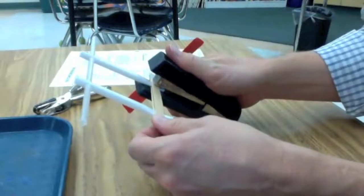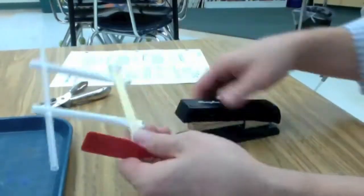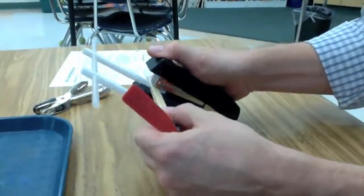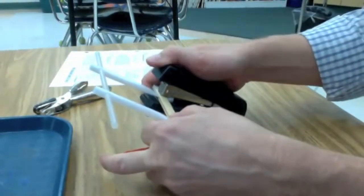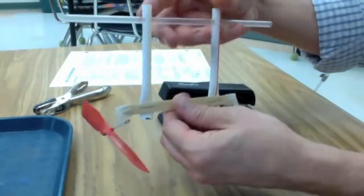Then, use a stapler to staple through the popsicle sticks and the jumbo straws. You may want to do this on both sides, but be careful. The staples do stick out on both ends.